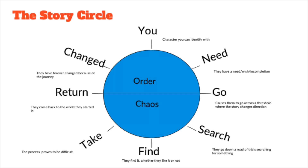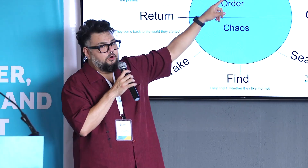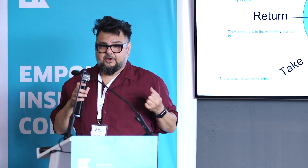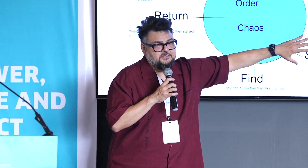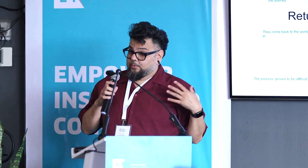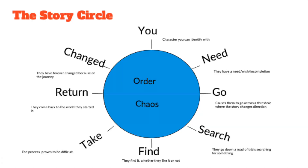In drama terms, this is Act One — beginning of order, going into chaos in Act Two, then back to order in Act Three. The chaos is the fun part of the story; it's what makes things interesting. When you're in it, it may not feel interesting, but when you come out and tell that story, it's what people want to hear. This simplified story circle is also an algorithm — follow these steps and you get the same outcome, the same way you would with a computer program: you need, go, search, find, take it, return home changed.